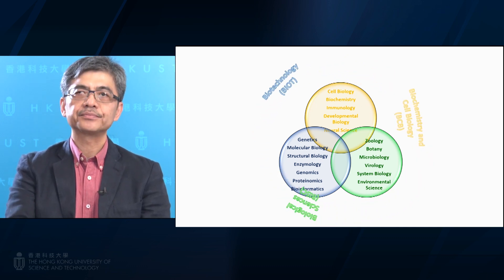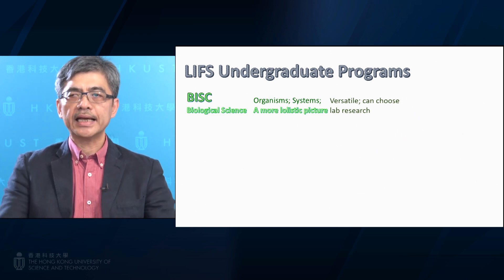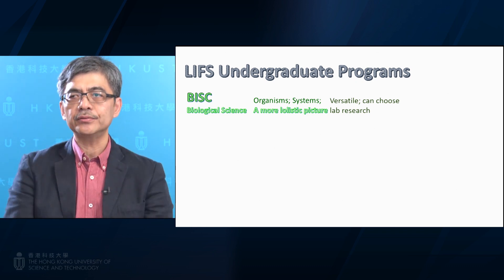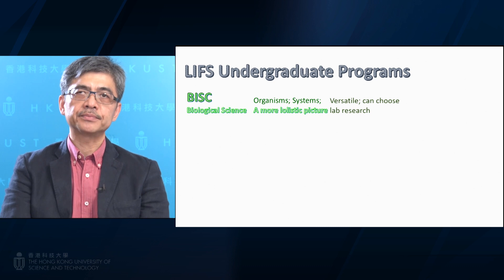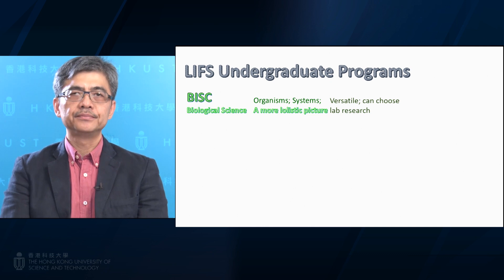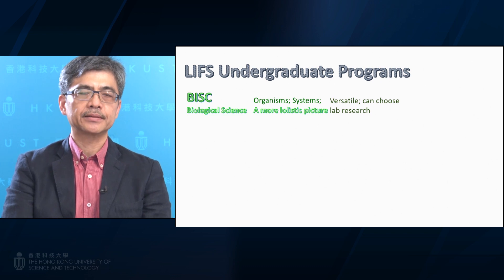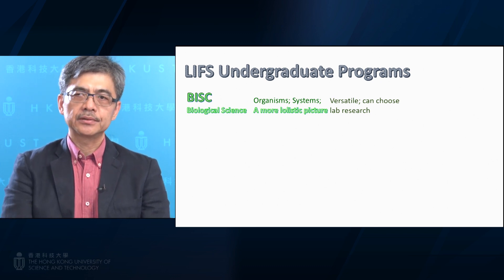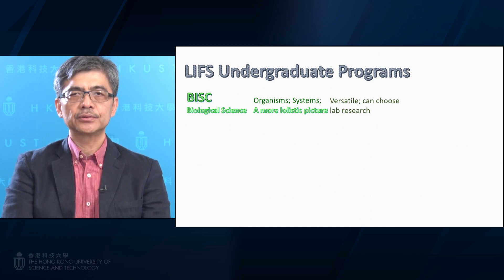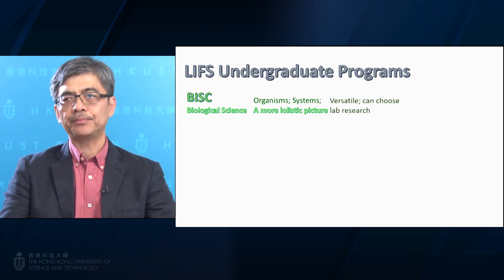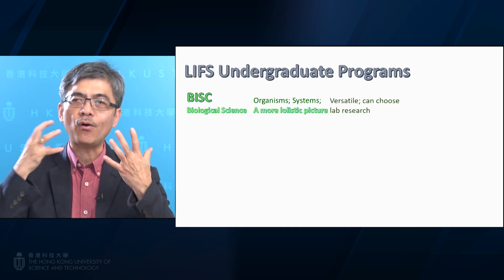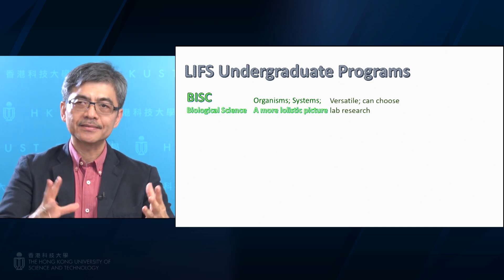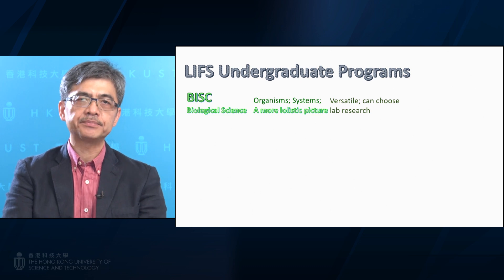In Biological Science, we more or less emphasize the organismal level — a bigger picture about life after learning the foundation. I would say it's more holistic. At the same time, we provide a more flexible curriculum for students who pick Biological Science, in the sense that the required courses to complete a degree are fewer. That leaves some space for students to take alternative subjects — for example, courses in business or in humanities and social science to fulfill their own ambitions in university education. It's not just life science, and it is the BISC program that can provide that kind of flexibility.